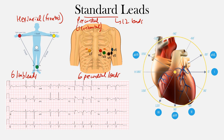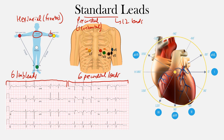Let's first look at the frontal plane, the hexaxial system — six limb leads. Here's your standard 12-lead we're looking at. These leads are detecting different electrical activity and giving you a different position. Notice that lead one is positioned here with the positive end at the left upper limb and the negative end on the opposite side. Then you have lead three with its positive end here and negative there, and lead two with the positive end here and negative there.